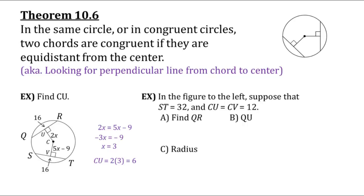Our last example: in the figure, ST equals 32 and CU and CV both equal 12. Since CU and CV are equal to 12, our two chords are equidistant and perpendicular from the center, which means the two chords are congruent. So if ST equals 32, then QR equals 32. Also, since the perpendicular segment extended all the way out would be a diameter, and by theorem 10.5 a diameter perpendicular to a chord bisects it, if QR equals 32 then QU is half of that — just 16.